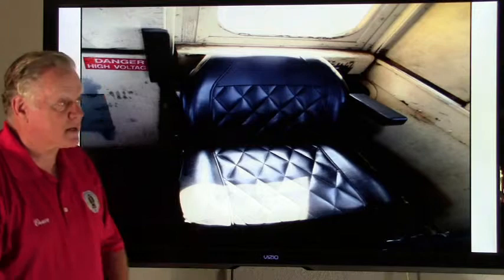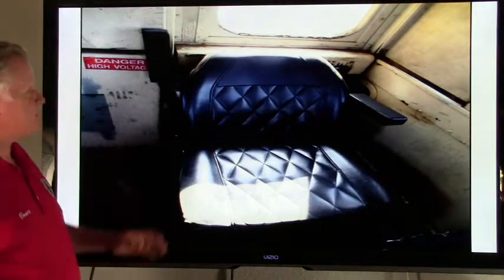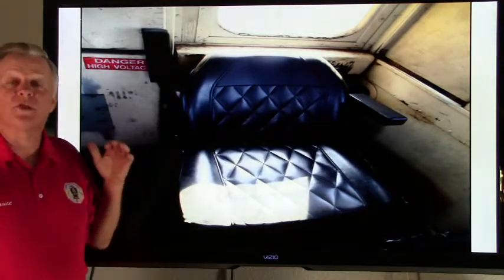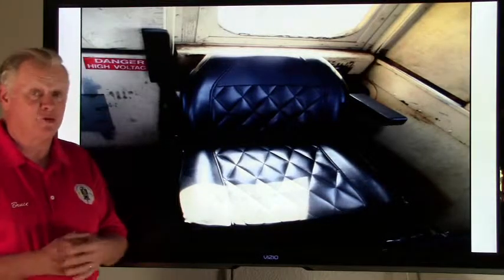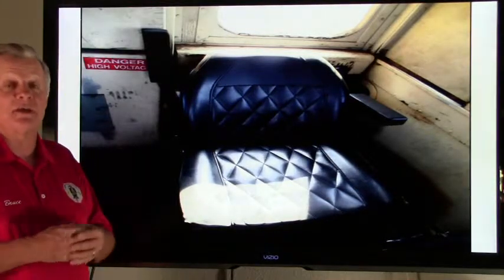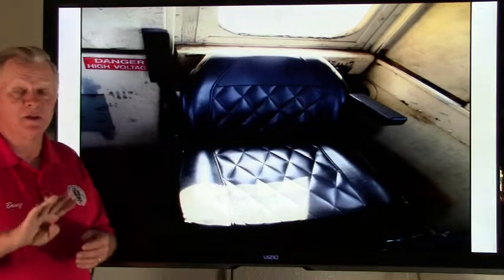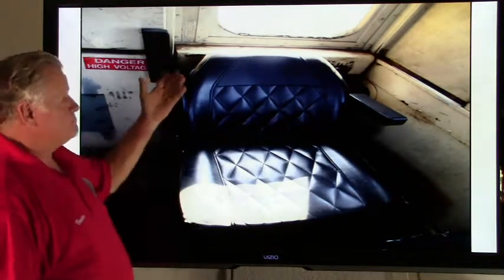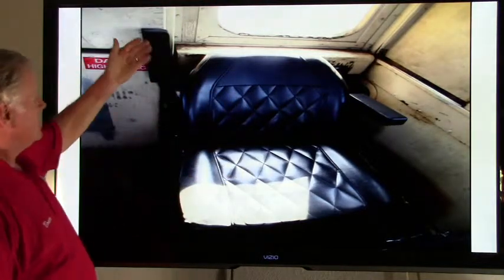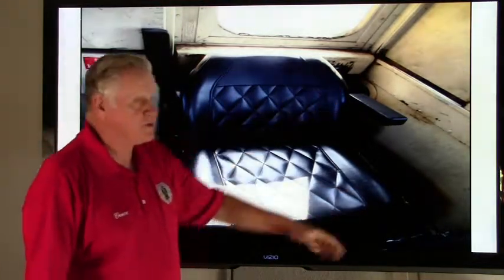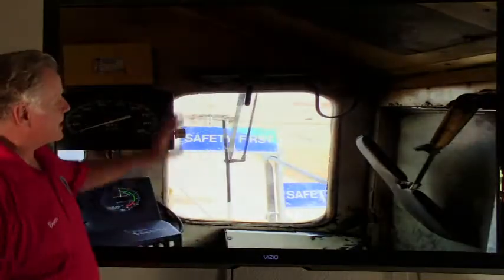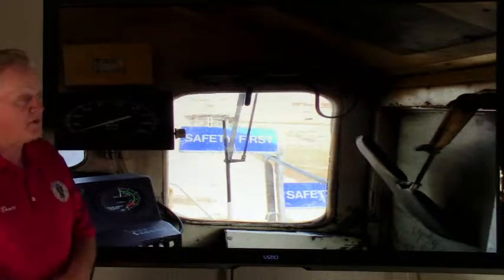Next we're going to talk about cab seats. Depending on what the locomotive is used for, you might have one cab seat, two cab seats, or three — and on big main-line units you might have as many as four seats. Most typical seats have a bottom cushion, back cushion, right armrest, and left armrest. They adjust in height, swivel, and lock into place.